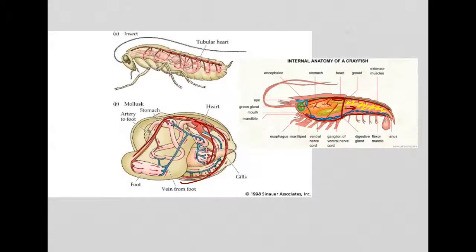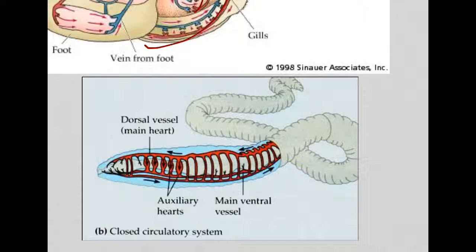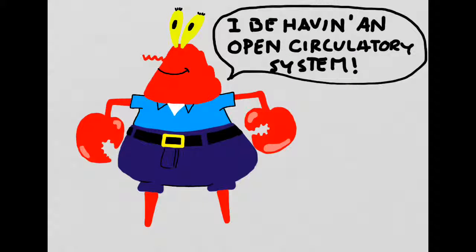Remember that all three of these organisms are relatively small. If they became any larger in size, diffusion wouldn't be able to occur fast enough to perfuse all of their cells with oxygen. Although earthworms are small, they actually have a closed circulatory system, which uses several small hearts to pump blood around their bodies. Because the blood stays within a series of blood vessels, we consider this to be a closed circulatory system rather than an open circulatory system.